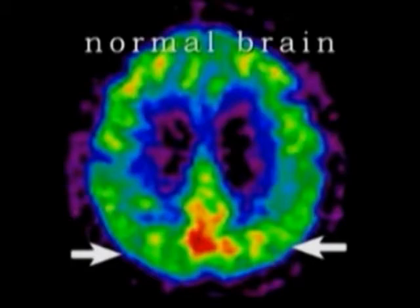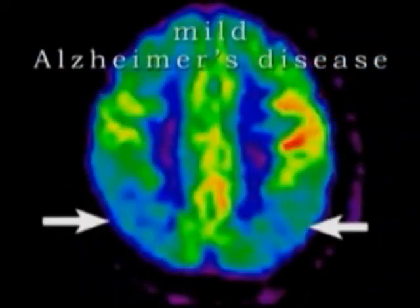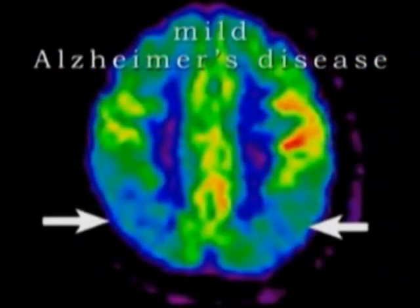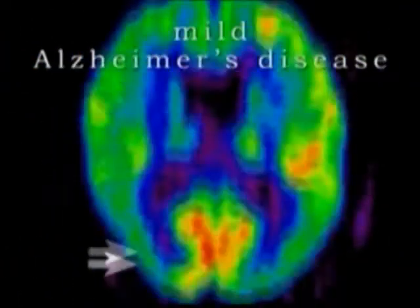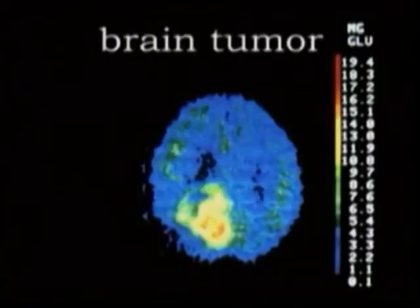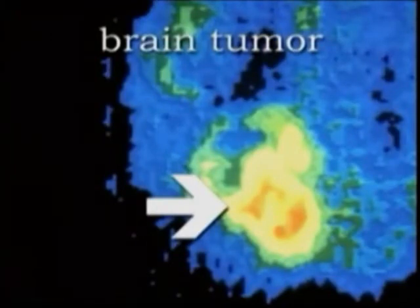Contrast that to a PET scan of a person with Alzheimer's disease, whose brain shows a dramatic decrease in metabolism, indicating widespread death of brain tissue. Conversely, this PET scan from a person with an aggressive brain tumor shows that the affected area is receiving more glucose than it normally would.